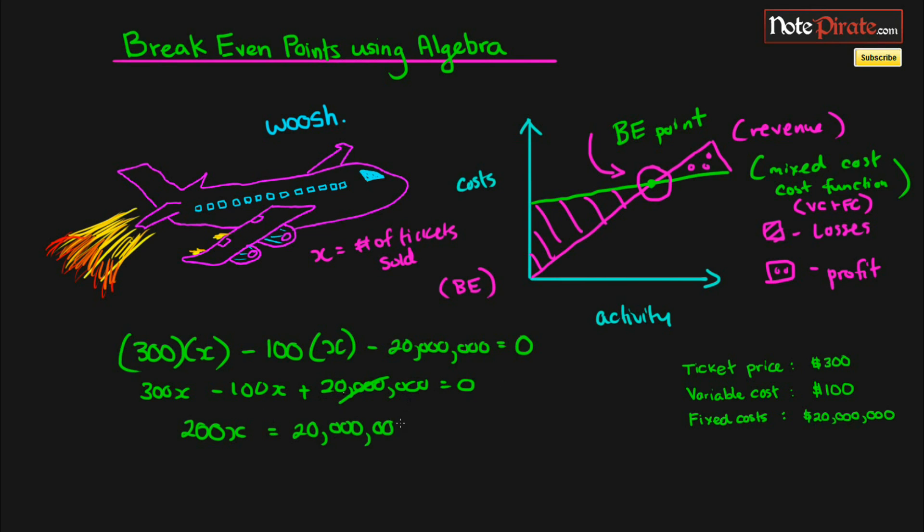Just some simple isolating for X, divided by 200, X will equal, well we can get rid of two zeros which leaves four zeros, and then the 20 in front of it, so that's going to be 100,000 flights. So 100,000 flights, that is your break-even point. We just solved for it using some simple algebra.